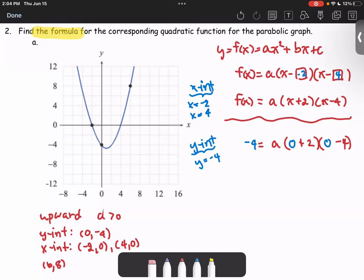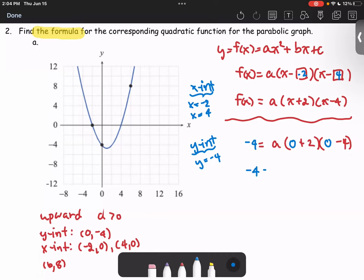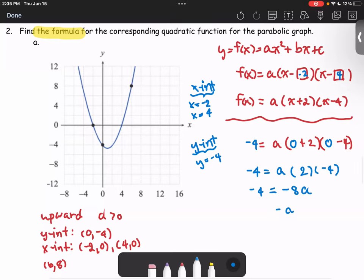We get -4 equals a times 2 times -4, or -4 equals -8a, which means a is 1/2.